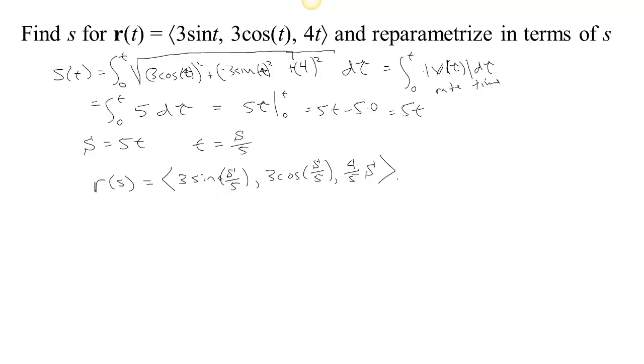And 4 times s over 5 would be 4 fifths s. Now, the beauty of this arc length parametrization is that we move at constant speed 1. So now, if we were to calculate the speed, when you rewrite it in terms of the arc length parameter, the speed is guaranteed to turn out to be 1.